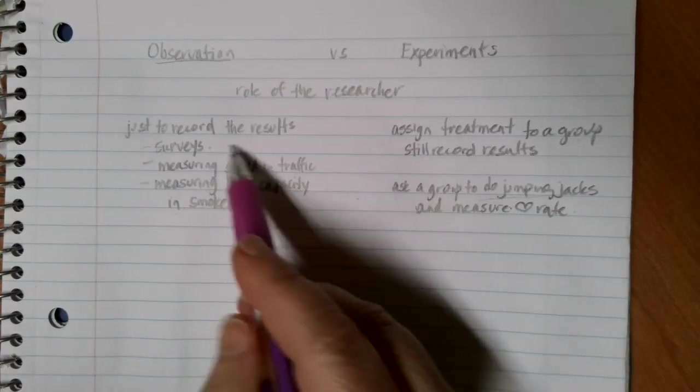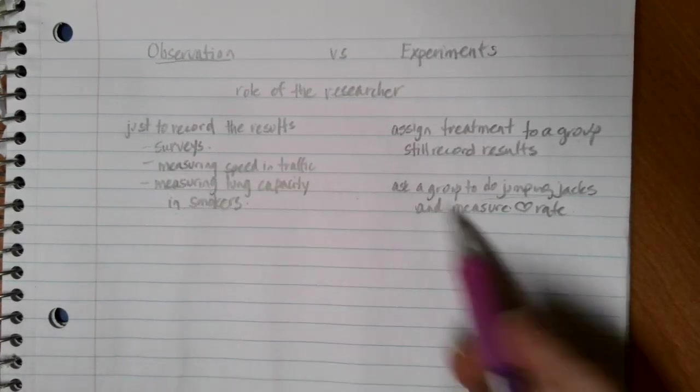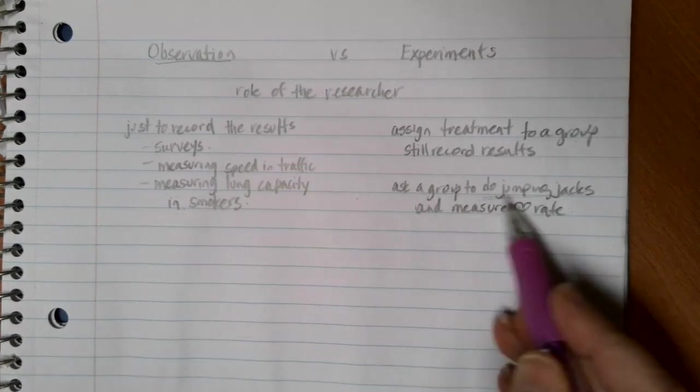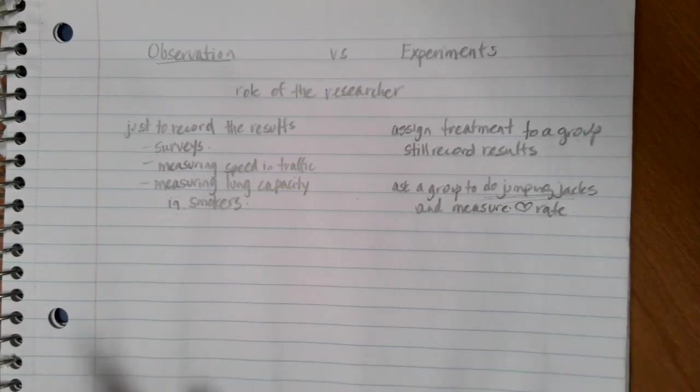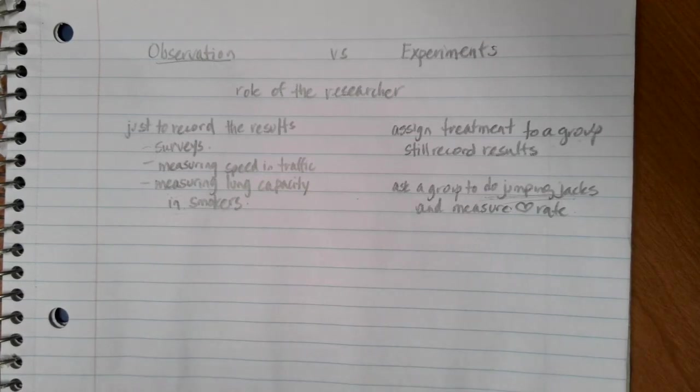So the researcher in experiments is assigning a group to actually do something and then do a measurement in order to categorize that.